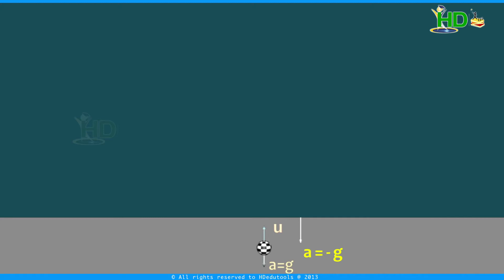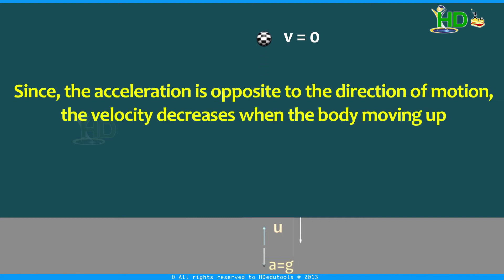Due to this, when the body is moving up, the velocity of the body will decrease, because the acceleration is acting opposite to the motion. The velocity decreases as it moves up. After some time, the velocity becomes zero — at that position, the velocity is zero.